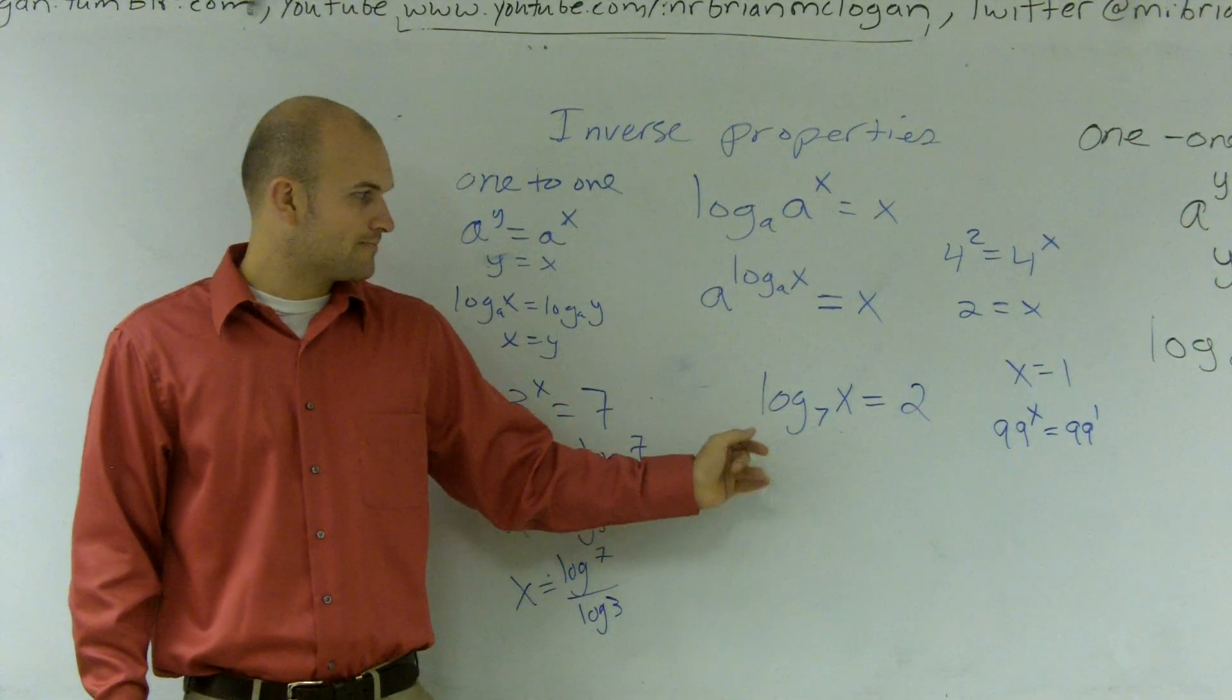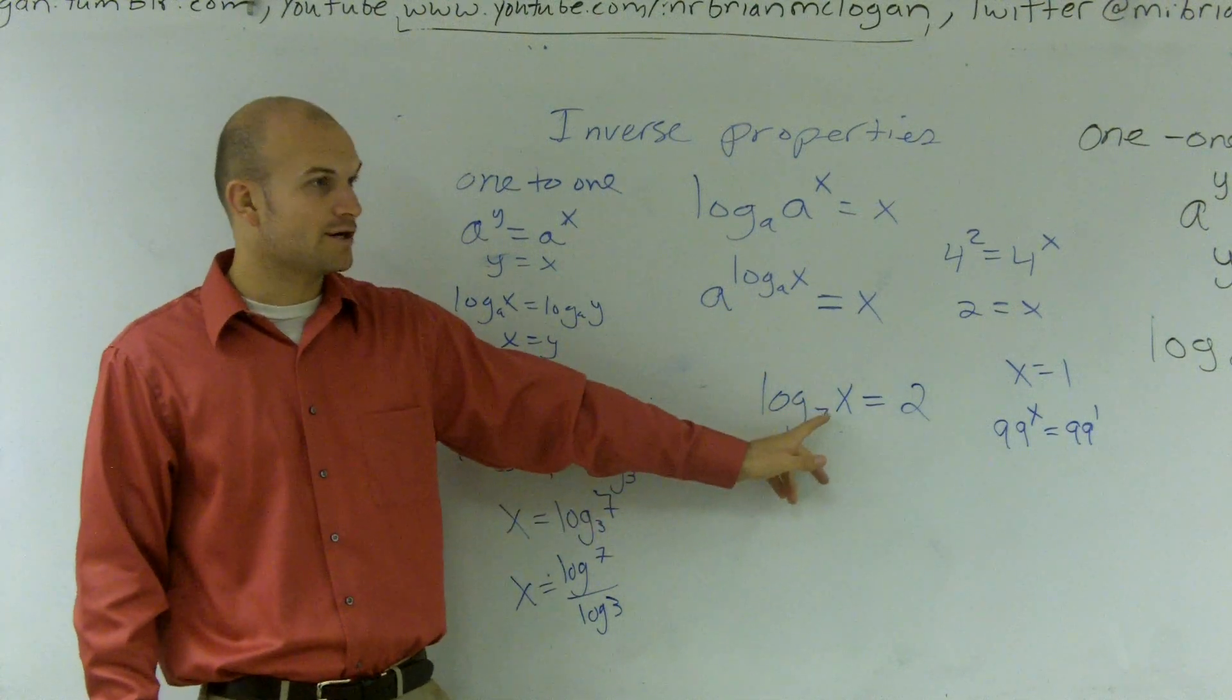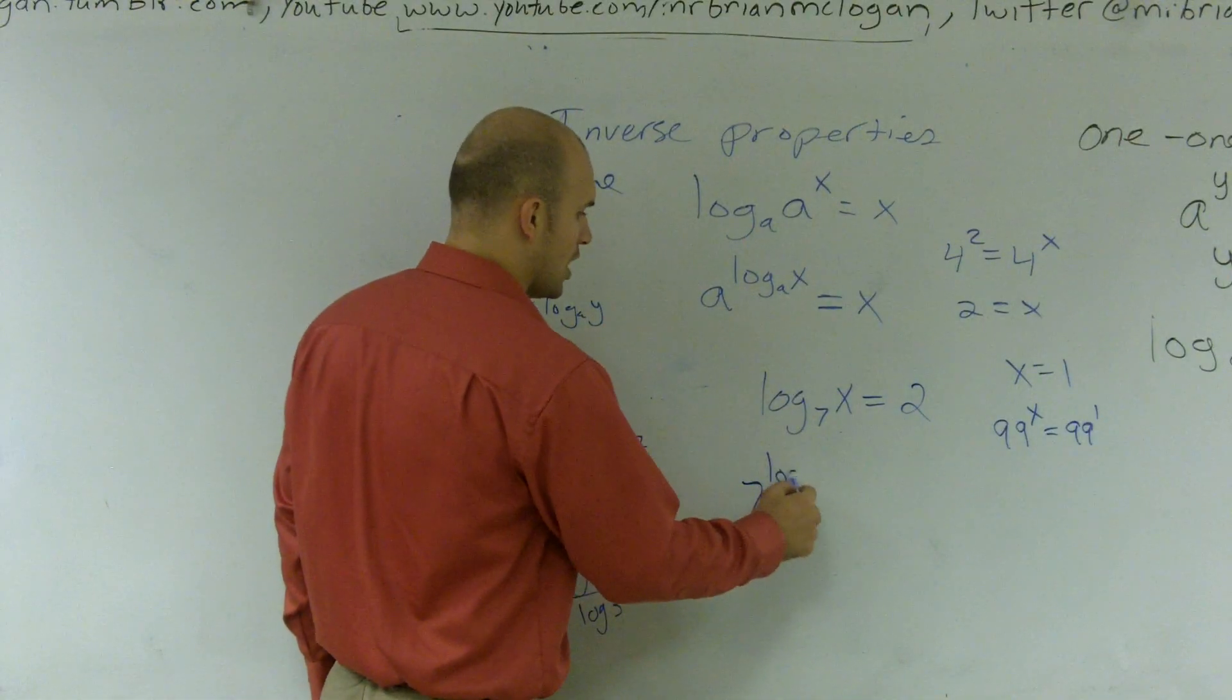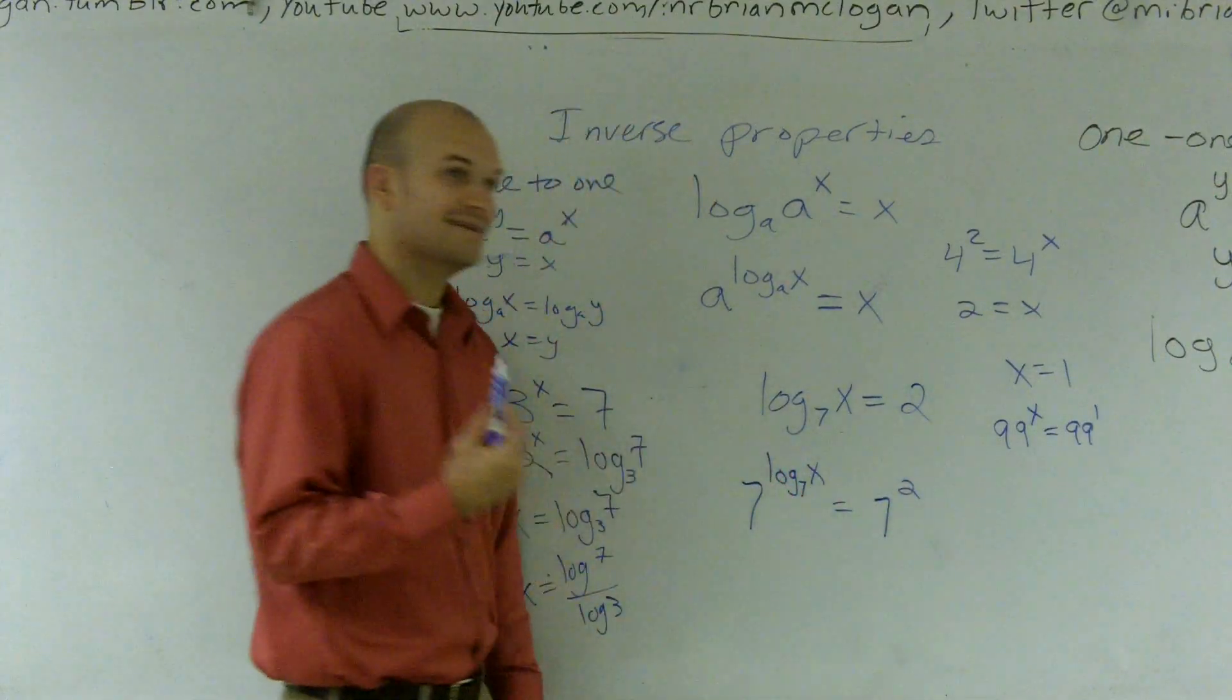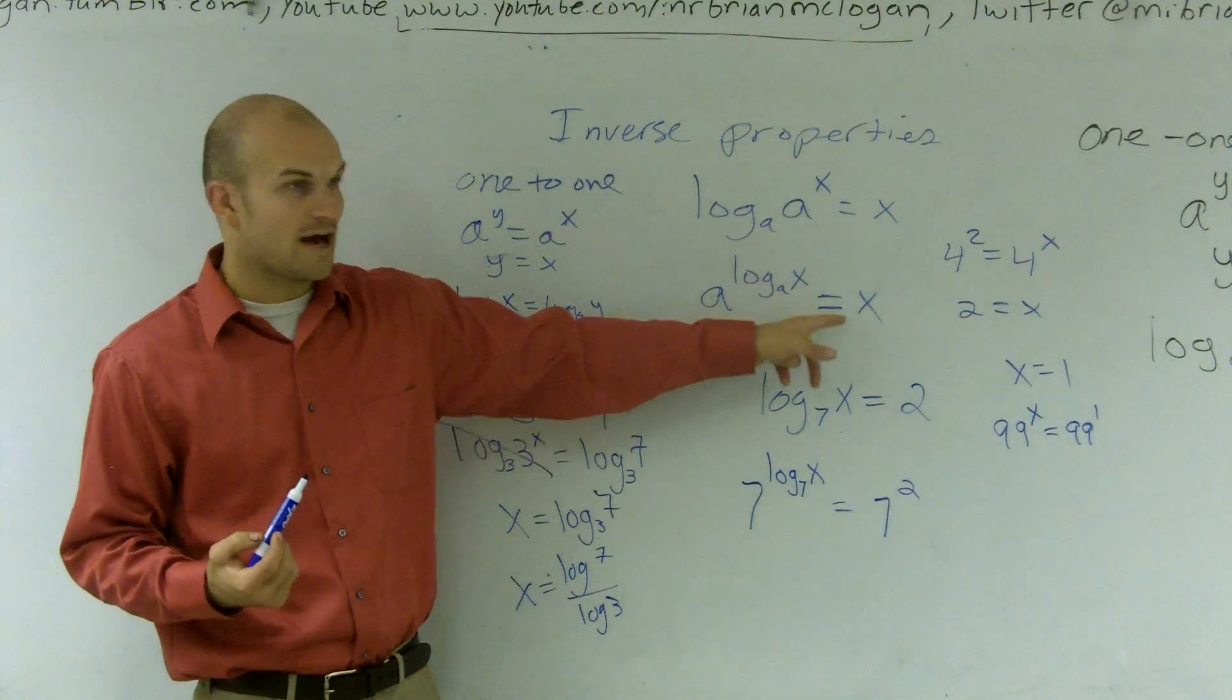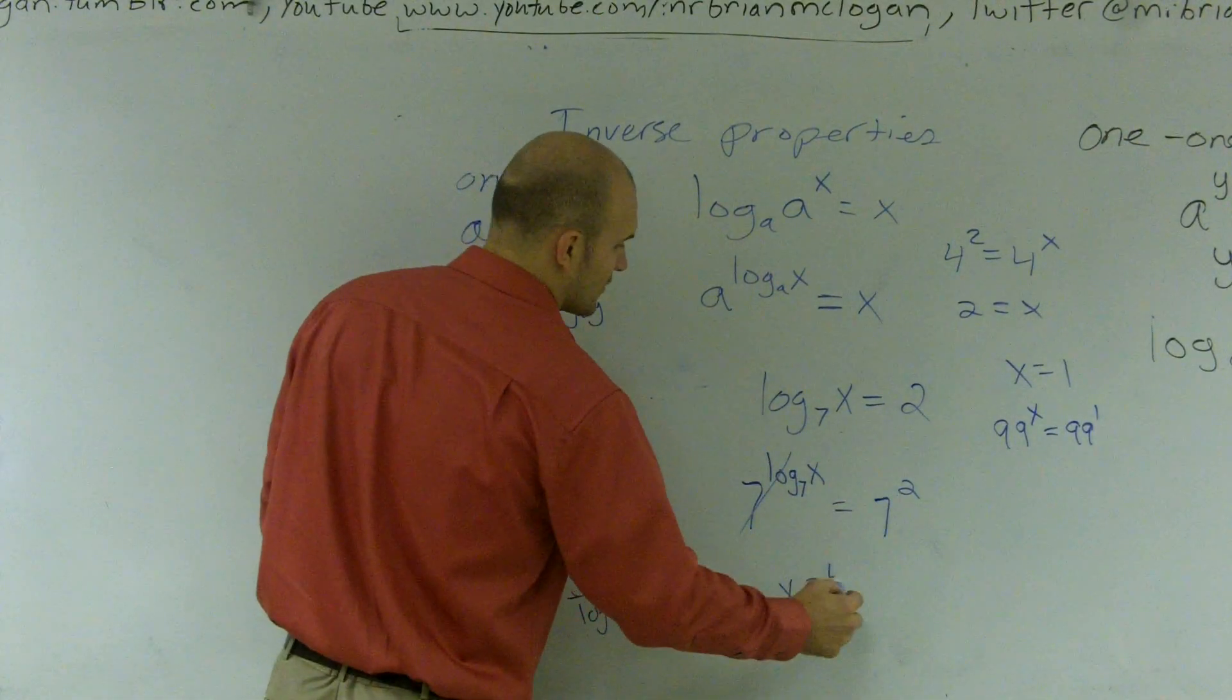Okay. You're going to want to choose what your base is of your logarithm. So if I raise 7 to the log base 7 of x equals 7 squared, now what happens is, what happens to this? Follow this through and it cancels out. So x equals 49.